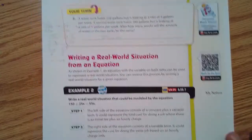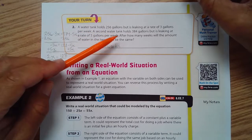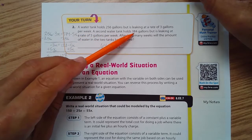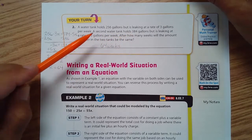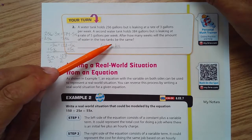Next we have: a water tank holds 256 gallons but is leaking at a rate of three gallons per week. A second water tank holds 384 gallons but is leaking at a rate of five gallons per week. After how many weeks will the amount of water in the two tanks be the same?